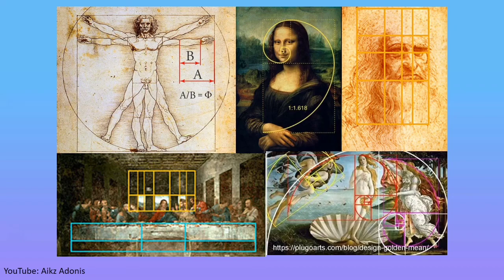many known individuals incorporated this magnificent number into their greatest arts and creations. During the Renaissance, Leonardo da Vinci used the proportions set forth by the golden ratio in constructing his masterpieces. Sandro Botticelli, Michelangelo, and others appear to have employed the same technique in their work.